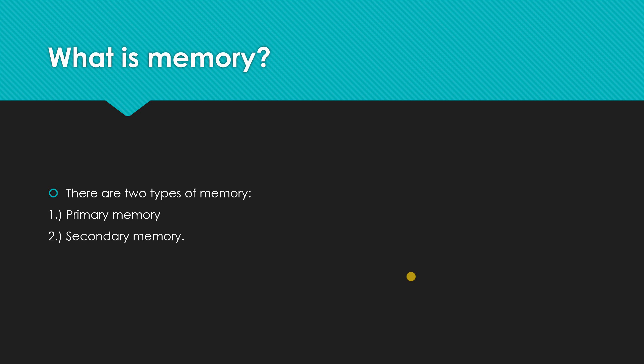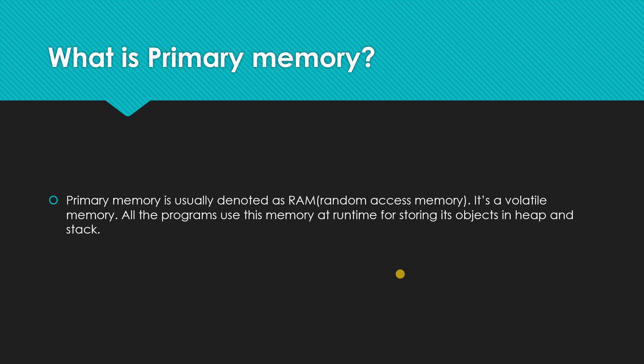First of all, let's discuss about memory. As we all use desktops and laptops, we already know there is RAM on our laptop or desktop, and there is other memory which is ROM. Primary memory is basically RAM, and RAM is the memory on which our programs run. While our programs are running, they declare variables and allocate objects, and all those objects reside on the heap and the stack, which are allocated in our primary memory, which is RAM.